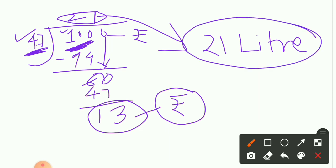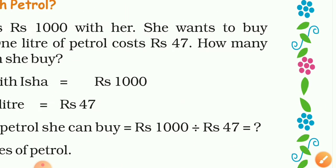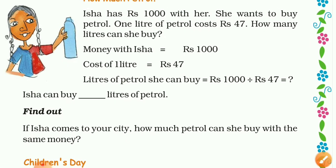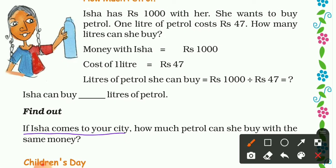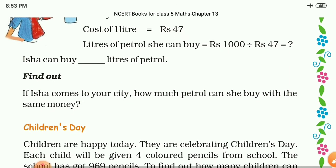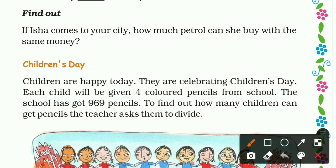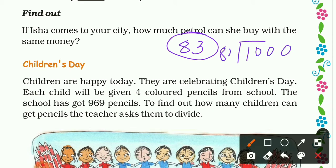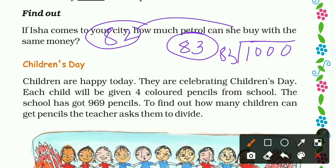So Isha can buy 21 liters of petrol and she has 13 rupees left over. Now find out: if Isha comes to your city, how much petrol can she buy with the same 1000 rupees? First find the rate of one liter of petrol in your area. For example, in my area it is around 83 rupees. Just divide 1000 by the local petrol price to get the answer.